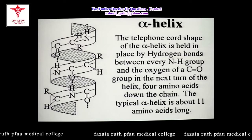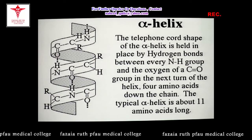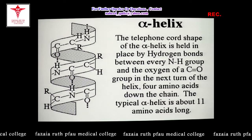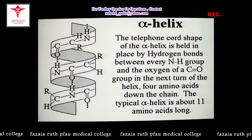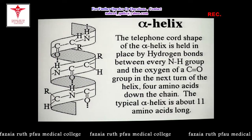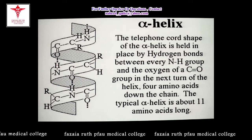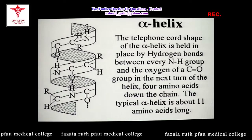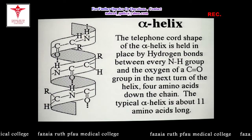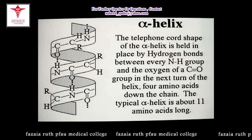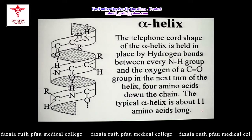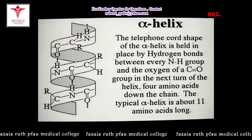The hydrogen of the amide nitrogen hydrogen-bonds with the oxygen of the carbonyl carbon four amino acid residues ahead of it. The oxygen of the carbonyl carbon hydrogen-bonds with the amide hydrogen four residues behind it. So a single peptide group is hydrogen-bonded four residues ahead and four residues behind, and this hydrogen bonding stabilizes the alpha helical structure.